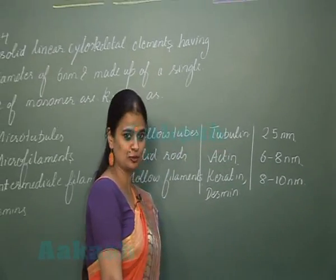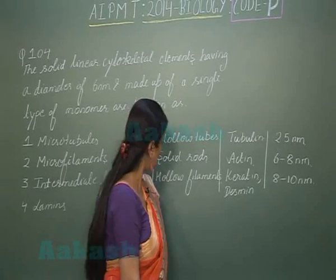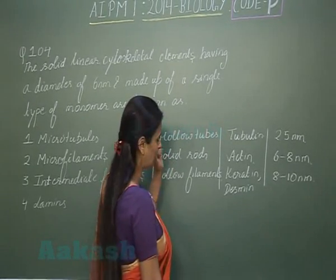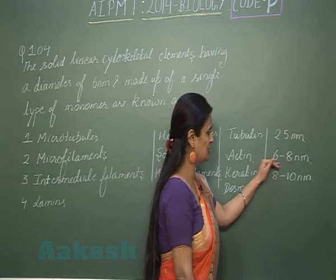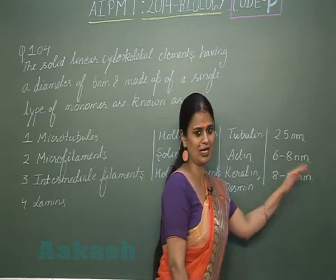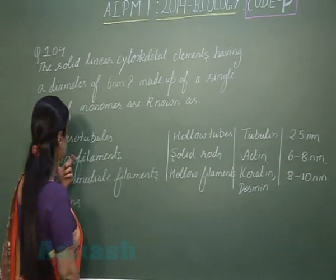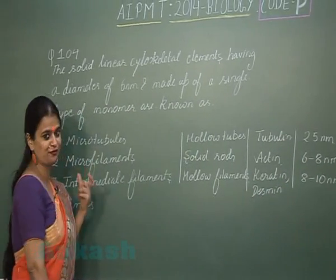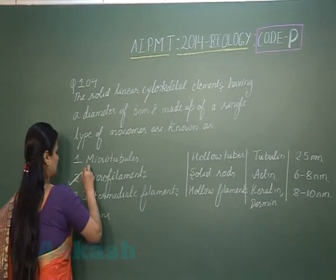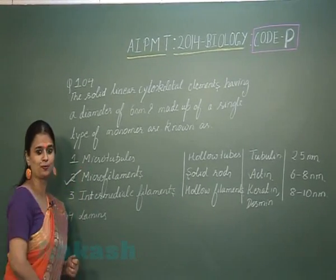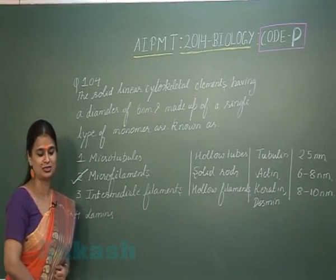Among these three cytoskeletal components, the one that is solid and has a diameter of 6 to 8 nanometers is microfilaments. So microfilaments represent the right answer for question number 104.